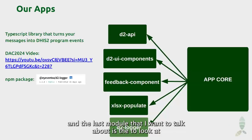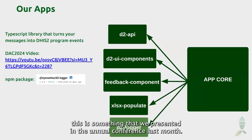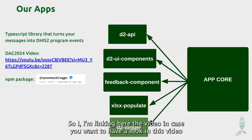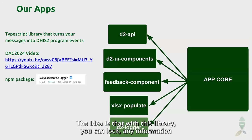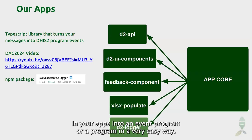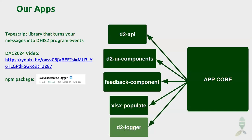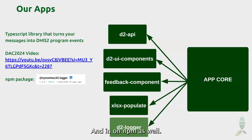The last module I wanted to talk about is D2Locat. This is something we presented at the annual conference last month — I'm linking the video in case you want to have a look. With this library you can log any information in your apps into an event program or a tracker program in a very easy way. It's open source and it's on NPM as well.